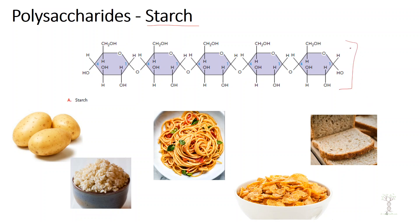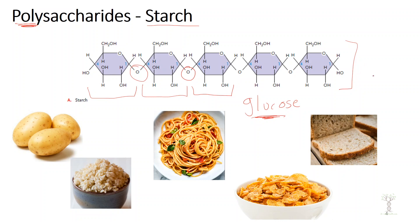These are all foods that contain starch. Every single monosaccharide in starch is glucose — every glucose molecule is bonded together through dehydration synthesis, just like when we were making disaccharides, except now we're making polysaccharides, so these are long chains of glucose with no other monosaccharides. Starch is a stored form of energy in plant cells. Plants store the starch and then we eat it and get energy from it.